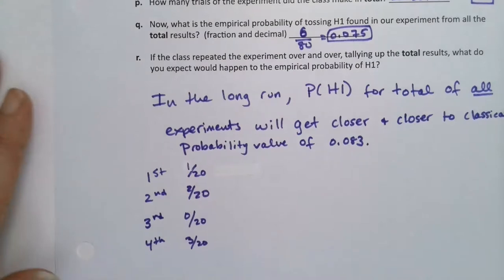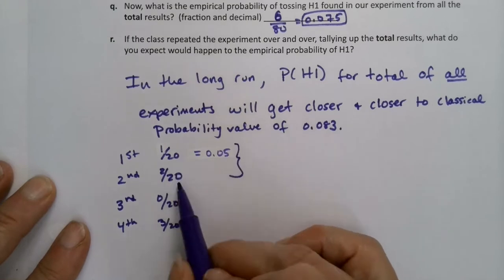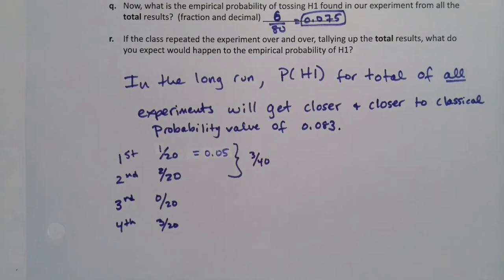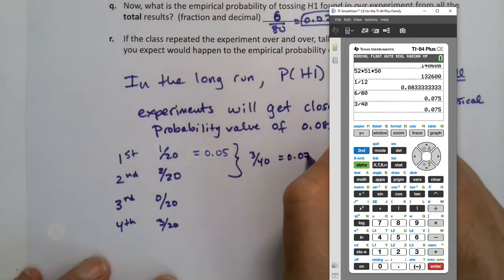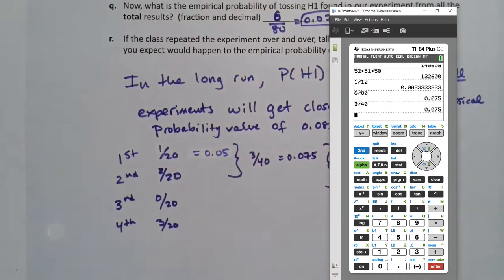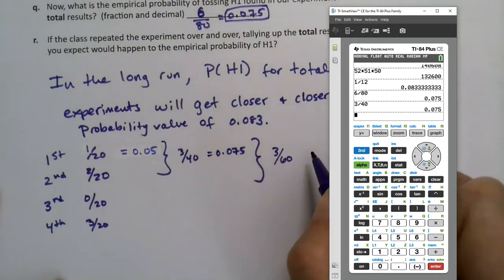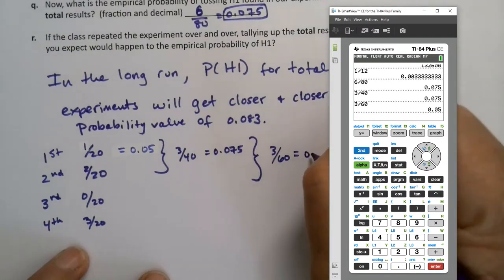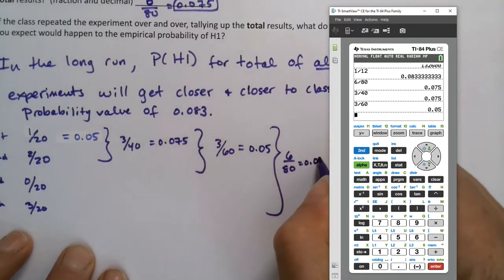So let me show you what's going to happen. The first trial is 0.05. Then let's accumulate for the next two — that would be 3 out of 40, which is 0.075. Then if I accumulate all three, there's 3 out of 60 trials. 3 divided by 60 is 0.05 again. And then when I get to the grand total, it was 6 out of 80, which is 0.075.